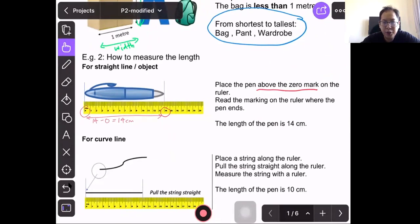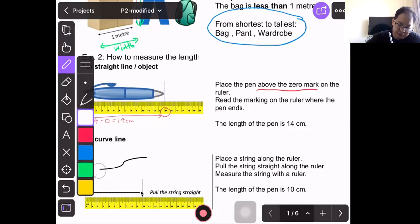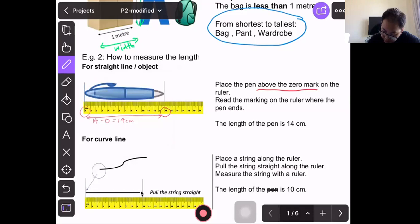How do we measure curve line? We can use a string because the string is flexible, it can be bent. We take the string, place it along the ruler. Next we pull the string straight along the ruler, and we measure the string with a ruler. In this case, the length of the string is 10 cm.